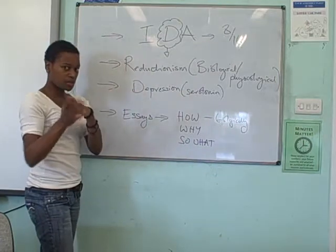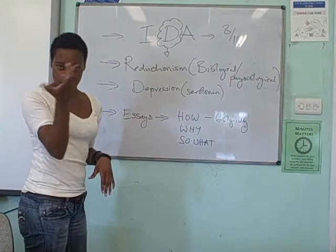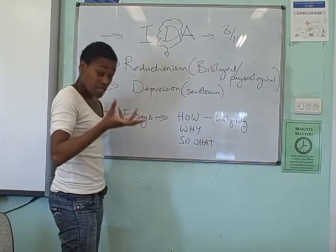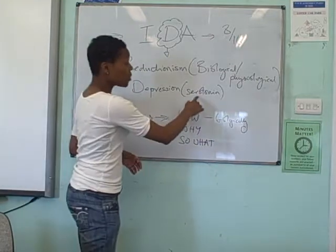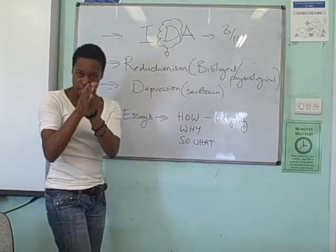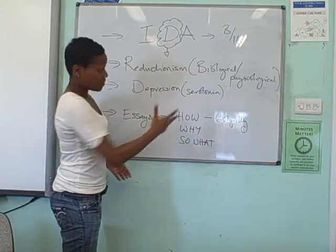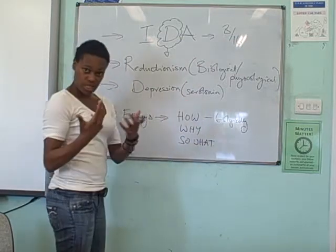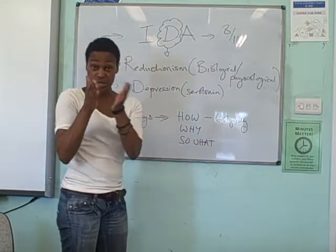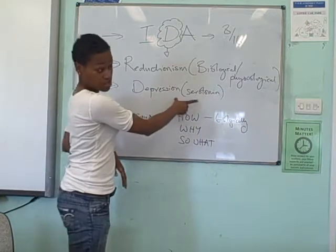So, as an example: depression. Depression is a mental illness which I'm sure you've heard about or know about. It's been argued that one of the reasons why people have depression is because of low levels of serotonin, and serotonin is a neurotransmitter. So you can already see how that's been reduced to a neurotransmitter. Some people argue that's caused it, and therefore what we can do is find ways of trying to alleviate those symptoms. Antidepressant drugs — that's what they do, they try to raise levels of serotonin.